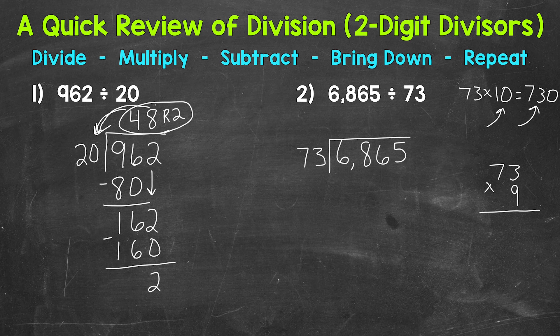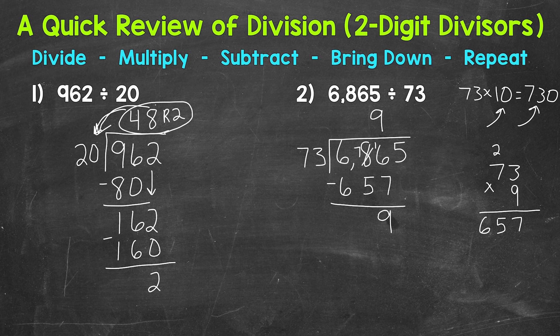So 9 times 3, 27. Then we have 9 times 7, which is 63 plus 2, 657. And that's as close as we are going to get. So 9 whole groups of 73. And that 9 needs to go above the 686, that last 6 we used. Now we multiply. I'm going to do this problem without drawing those arrows. So 9 times 73 is 657. Then we subtract. So 6 minus 7, we need to borrow. 16 minus 7 is 9. 7 minus 5 is 2. And then 6 minus 6 is 0.